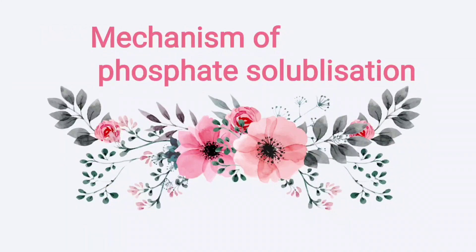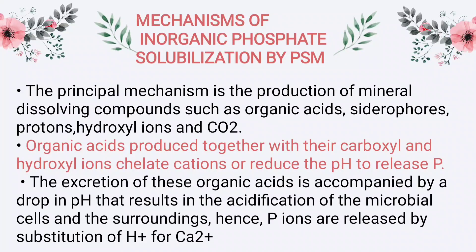Mechanism of Phosphate Solubilization: The principal mechanism is the production of mineral dissolving compounds such as organic acids, siderophores, protons, hydroxyl ions, and CO2. Organic acids, together with their carboxyl and hydroxyl groups, chelate cations or reduce the pH to release phosphorus. The excretion of these organic acids is accompanied by a drop in pH that results in acidification of the microbial cells and surroundings. Hence, phosphate ions are released by substitution of H⁺ or Ca²⁺ ions.